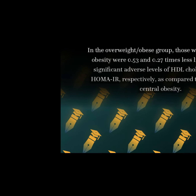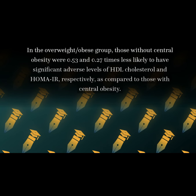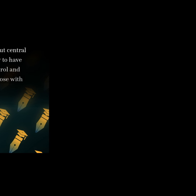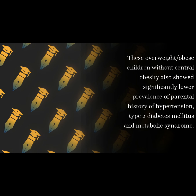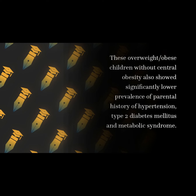In the overweight obese group, those without central obesity were 0.53 and 0.27 times less likely to have significant adverse levels of HDL cholesterol and HOMA-IR, respectively, as compared to those with central obesity. These overweight obese children without central obesity also showed significantly lower prevalence of parental history of hypertension, type 2 diabetes mellitus, and metabolic syndrome.